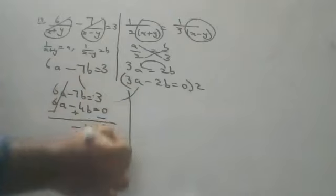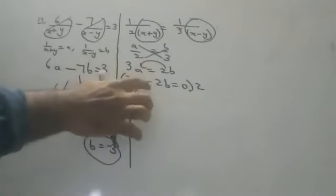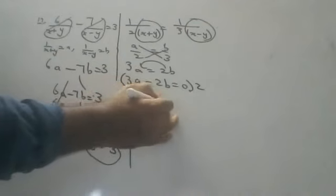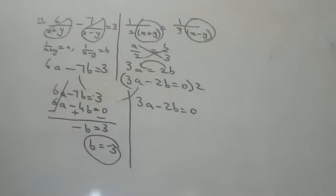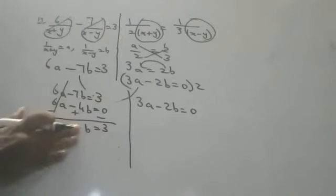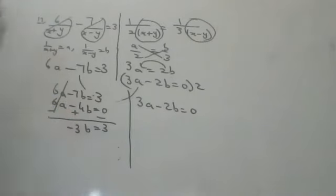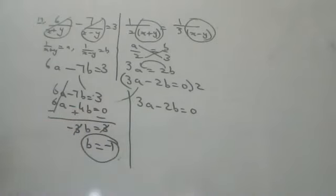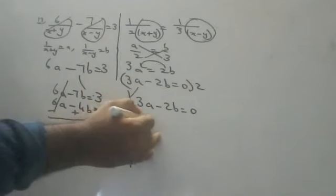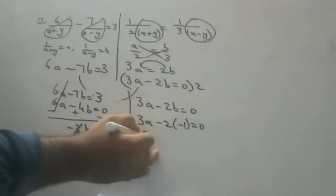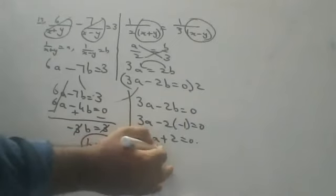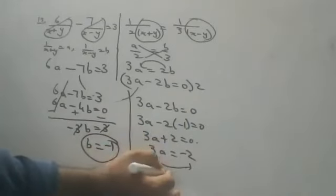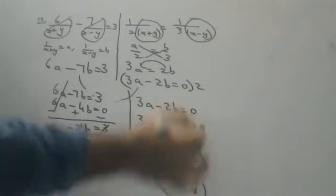Correcting the working: minus 7b plus 4b = minus 3b, so minus 3b = 3, giving b = minus 1. Now substitute b = minus 1 into 3a minus 2b = 0: we get 3a minus 2(minus 1) = 0, so 3a + 2 = 0, giving 3a = minus 2, and a = minus 2/3.